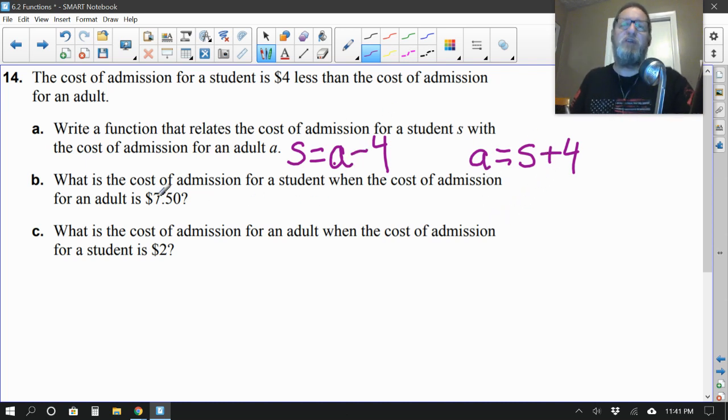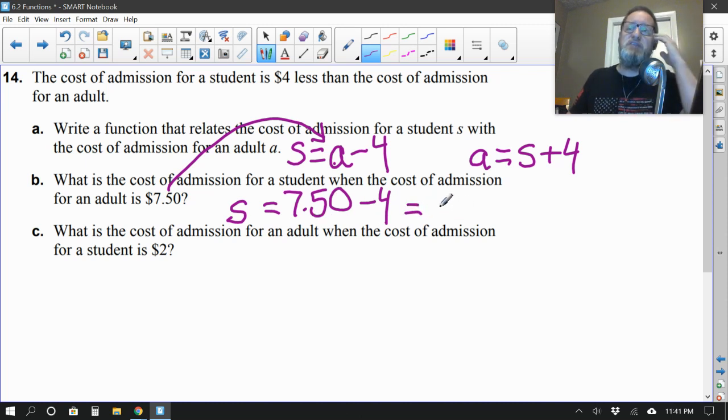Because, again, the student is 4 less. So if you add 4 to the student price, it would equal the adult price. You kind of might have to pause and rewind and listen to that part again. Hopefully that makes sense. Okay. Moving on. Part B. What's the cost of admission for a student? So how much would a student cost if the cost of admission for an adult is $7.50? Oh, okay. So what we're going to do here is just put this $7.50 right here where the adult price is. So student price equals $7.50 minus 4. Well, $7.50 minus 4 is actually $3.50. So there we go. Here's that one.